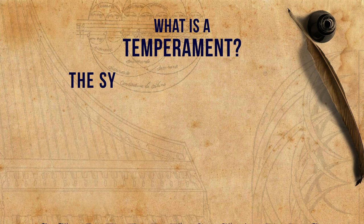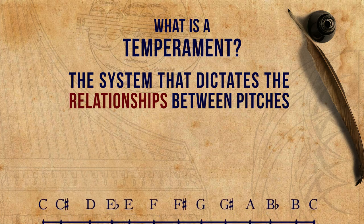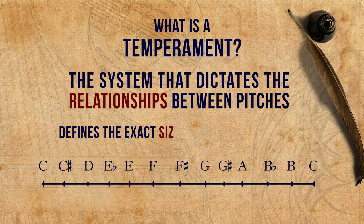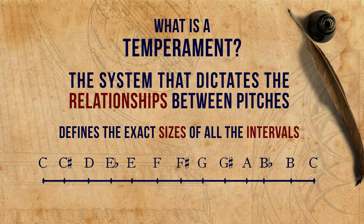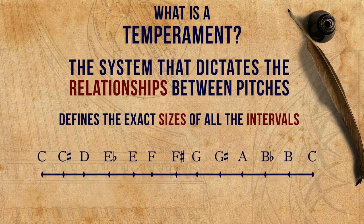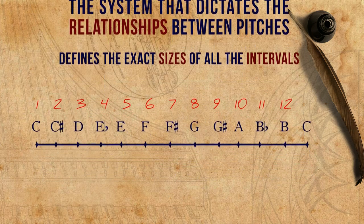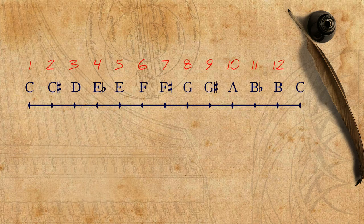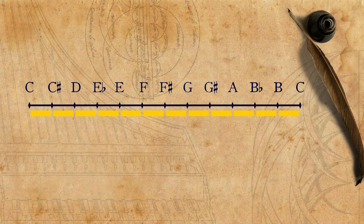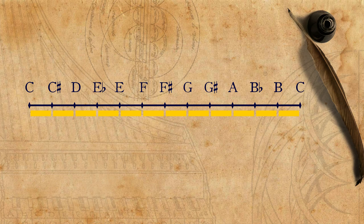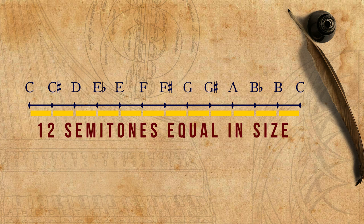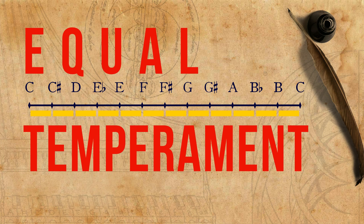A temperament is the system that dictates the relationships between pitches — or in other words, defines the exact sizes of all the intervals in a system. Nowadays, we commonly use 12 pitches in each octave, and those are equally divided throughout the octave. Between each of the pitches, a semitone is formed, and all of these semitones are equal in size. This temperament is the one commonly used nowadays, which we call equal temperament.